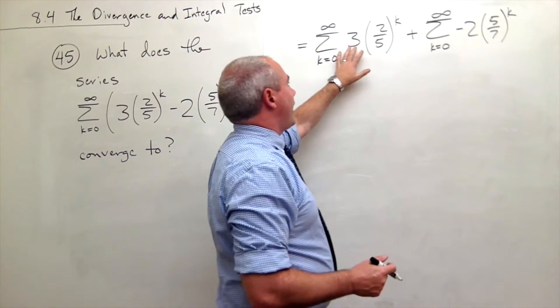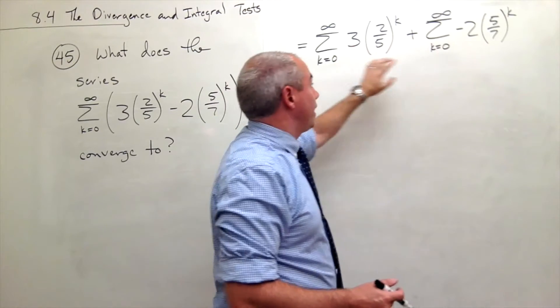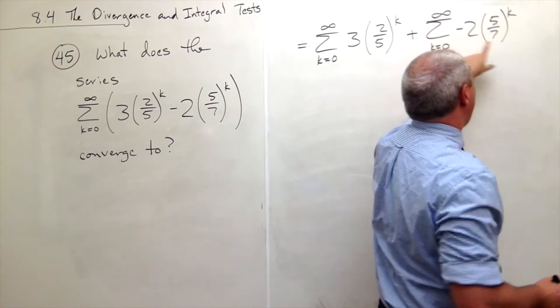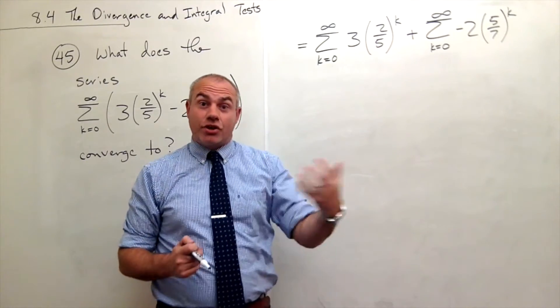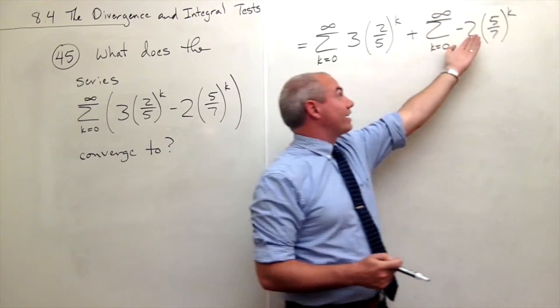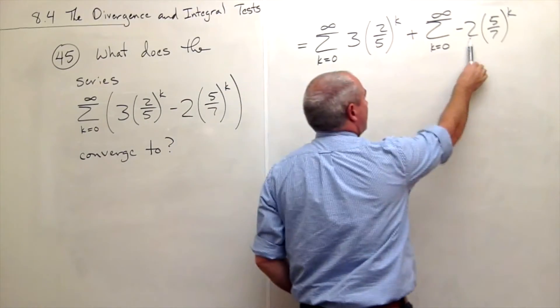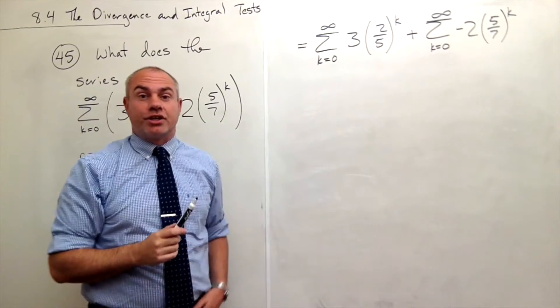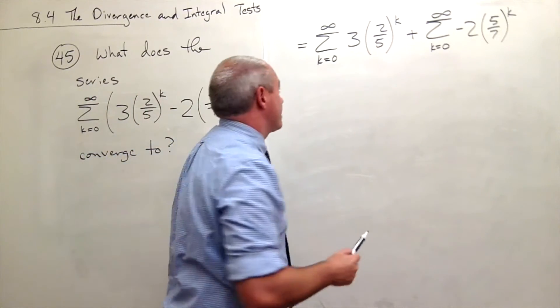Second thing I'll notice is I have a sum of a bunch of things that all have a factor of three, and I have a sum of a bunch of things that all have a factor of negative two. So I can factor out the three and factor out the negative two. In other words, three can move through a summation, the minus two can move through the summation, and we can move a constant through a sum.